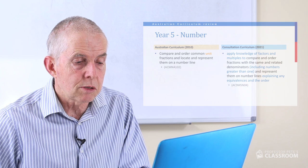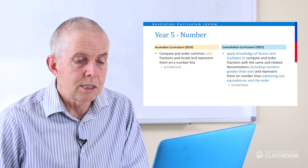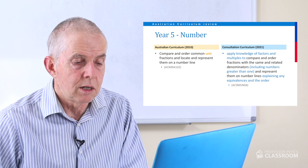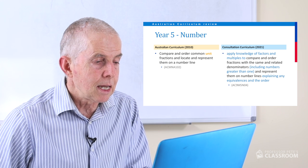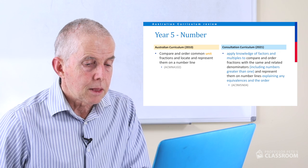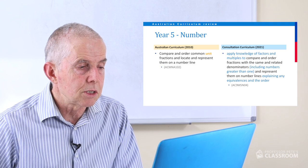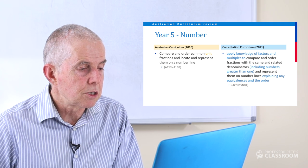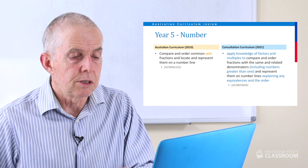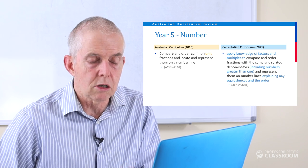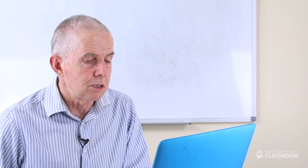The fourth number content descriptor: apply knowledge of factors and multiples to compare and order fractions with the same and related denominators, including numbers greater than one, represent them on number lines and explaining any equivalences and the order. There's lots of really good content. They've used similar language here — the words 'including numbers greater than one' — as they did in the first content descriptor referring to decimals. So they've now applied the same language to fractions and linked this with factors and multiples. There's lots of valuable explanation of what is expected of students and therefore teachers.